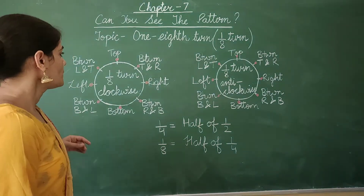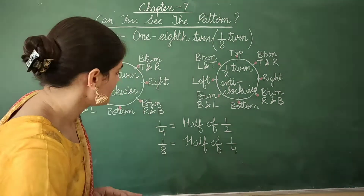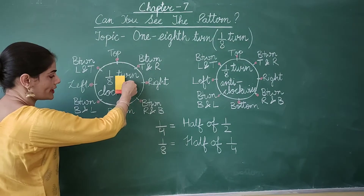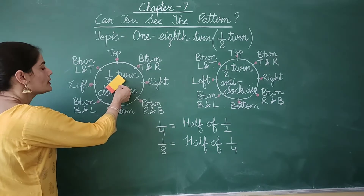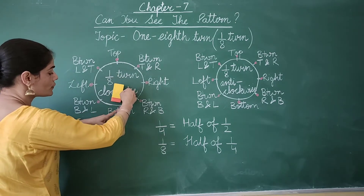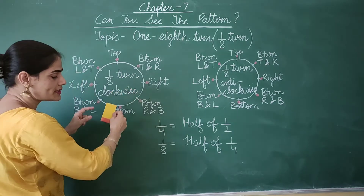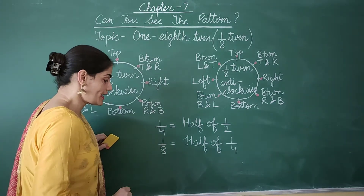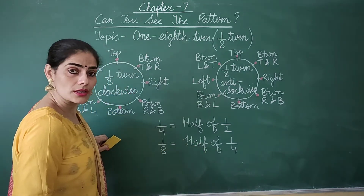Let's do this. If there is an object pointing towards the bottom, where will it point if I ask you to give it one-eighth turn clockwise? It will point between bottom and left. Give it one more one-eighth turn — it will point towards the left. From bottom to left, two one-eighth turns were required. So one-eighth turn is equal to half of one-fourth turn, or two one-eighth turns make one quarter turn.